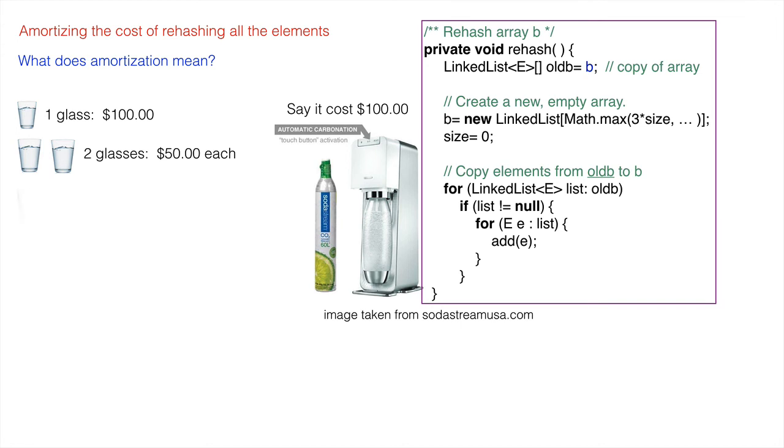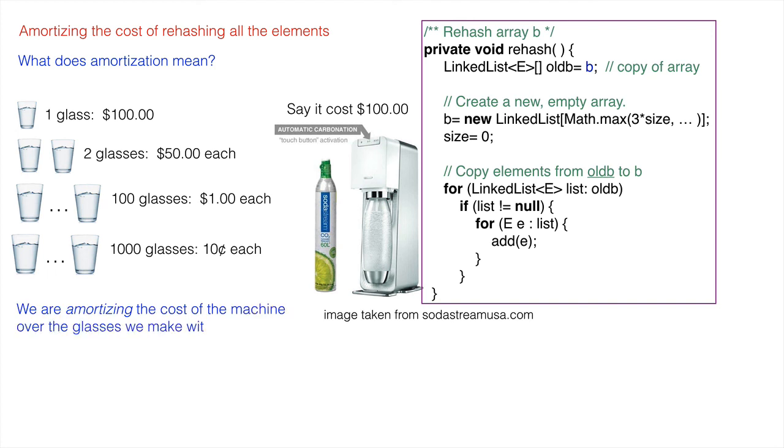After 100 glasses, each glass cost $1. After 1,000 glasses, each glass cost us $0.10. We amortized the initial cost of the machine over the glasses of fizzy water that we made with it. That's amortization.